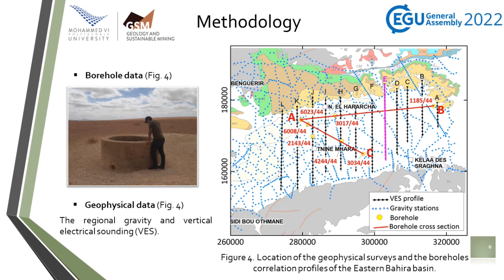The methodological approach consists in the analysis and interpretation of available borehole and geophysical data in the eastern part of the Bahia. For the borehole data, lithostratigraphical data from exploration boreholes carried out in the eastern Bahia Basin were used to establish correlation sections in this study.